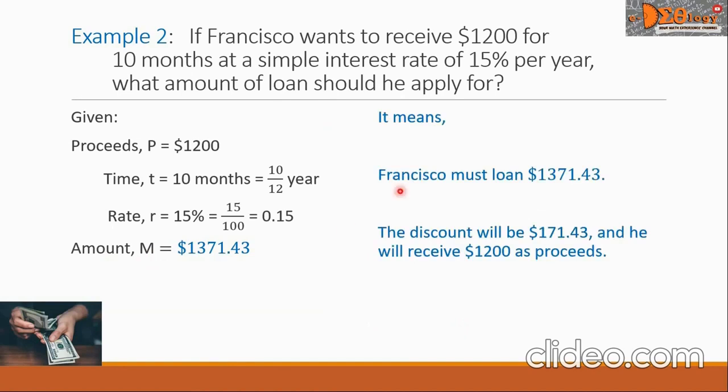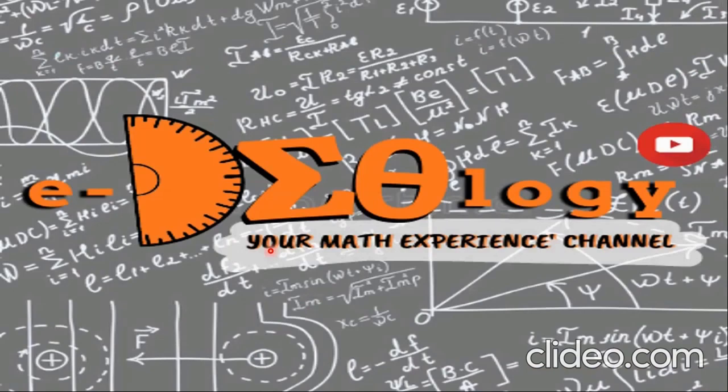It means to say, Francisco must loan this amount, 1,371.43, the discount will be 171.43, and he will receive that $1,200 as proceeds. This is our final answer. I hope you learned something from this video. So, see you again next time.